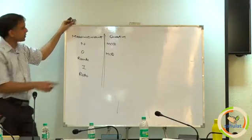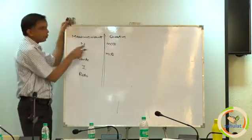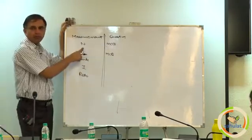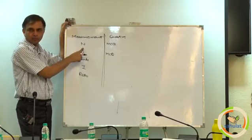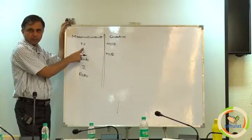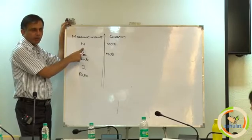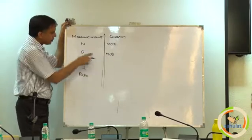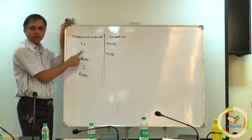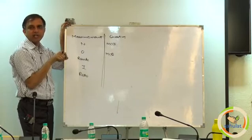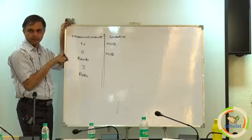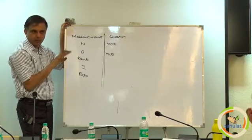Can you give one example each? MCQ nominal: place you belong to — Delhi, Agra, Jaipur. MCQ ordinal: UG, PG, PhD. Correct.